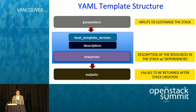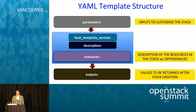Now let us briefly look at the template structure. The template has five sections. The first section is an input section in which you specify the parameters. There are two sections that are pretty self-descriptive: one is the heat template version, which heat uses to determine which version of the template you are using, and the second is a description where you can provide anything that describes your stack. In the resources section is where you describe all the resources — remember the declarative modeling where you primarily describe all the resources without the details and let the service figure those details out for you.